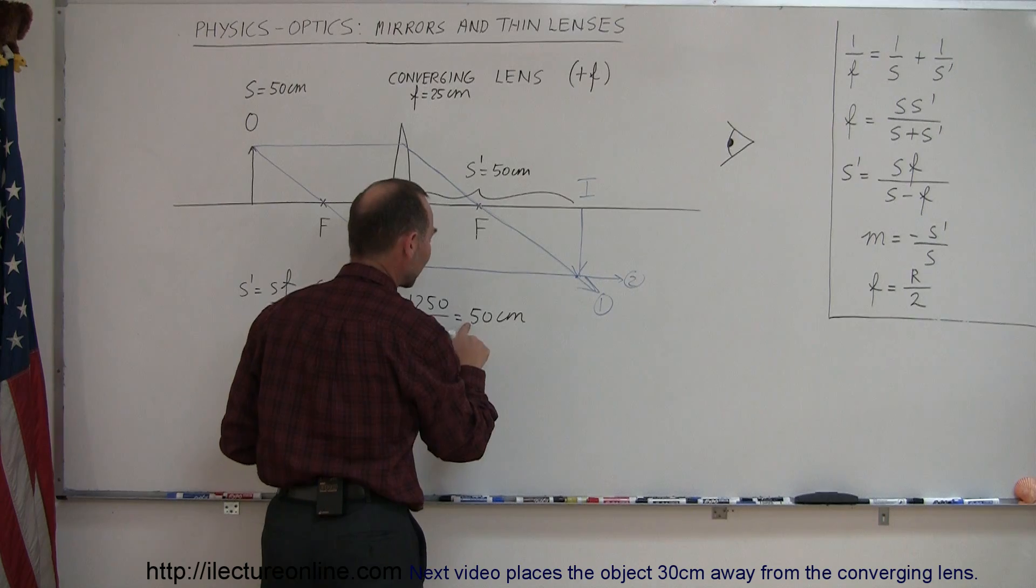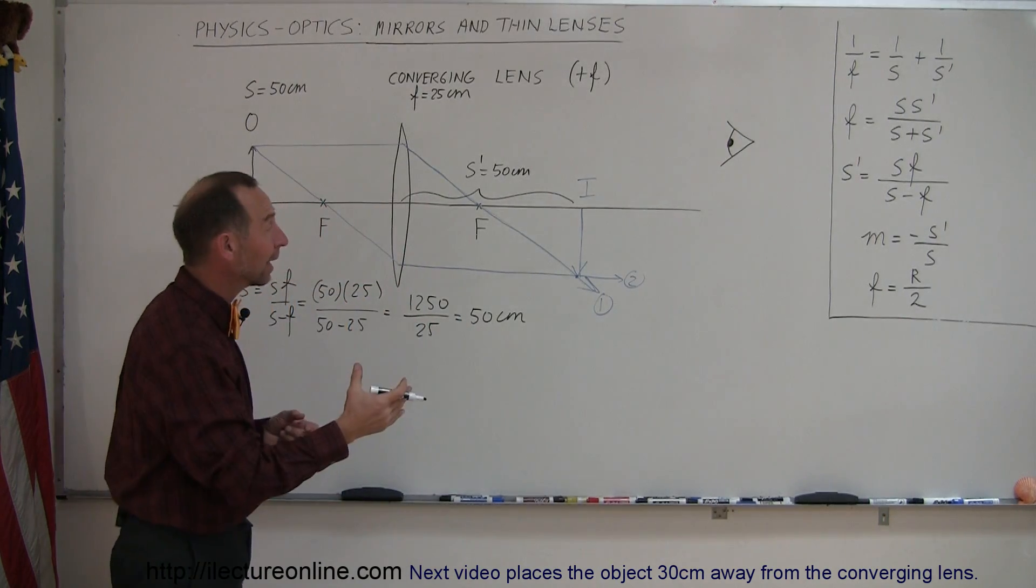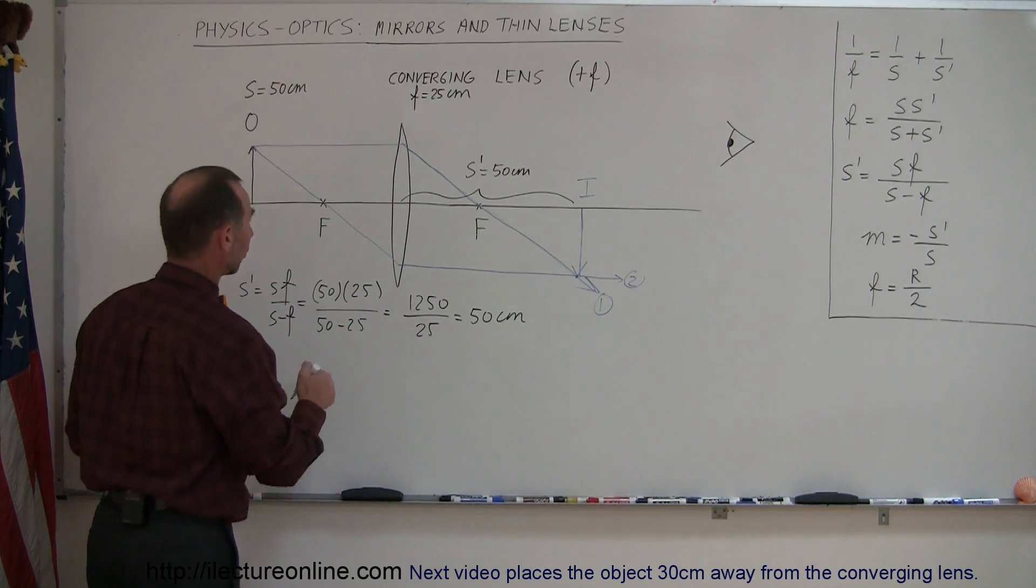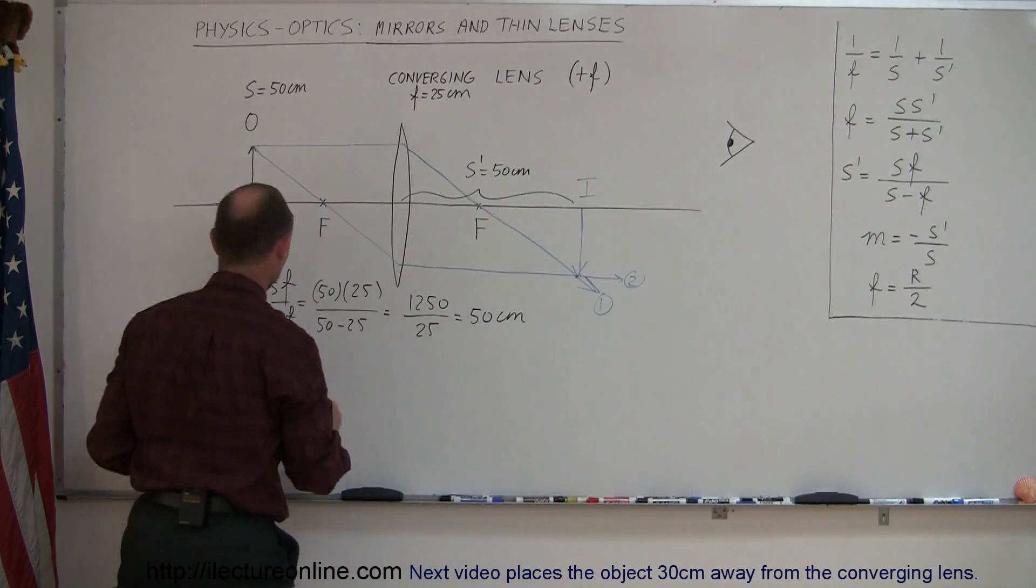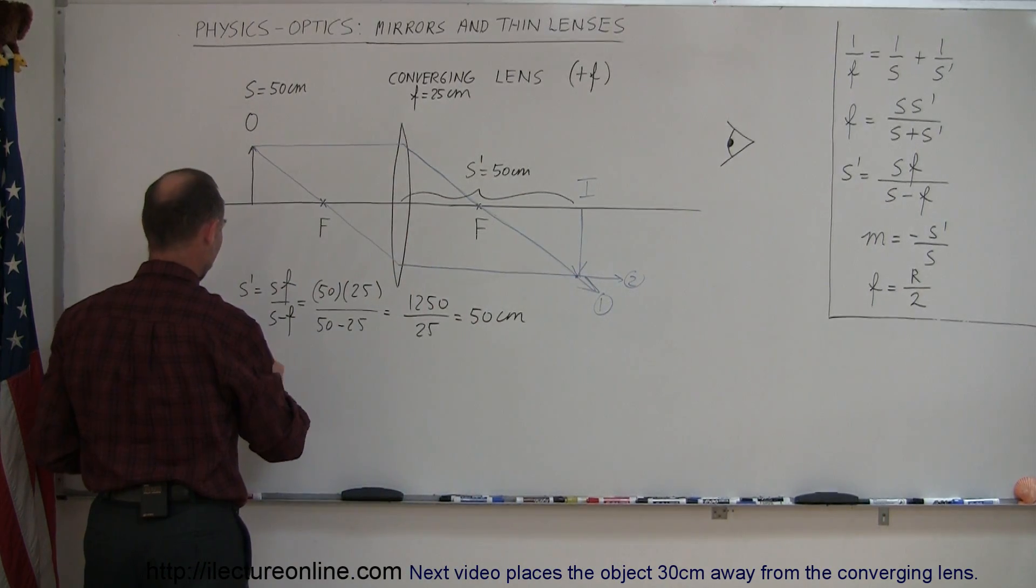Now, it is a positive 50 centimeters, which means it's behind the lens and it's a real image. So, there's really an image that forms here because the two rays do converge together behind the lens. So, the image, I, is real.